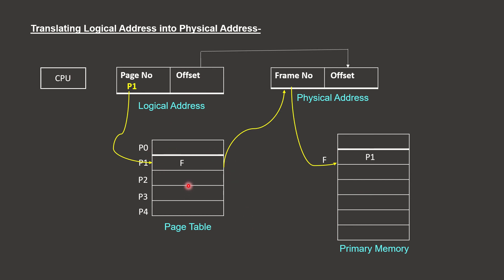We look up the page table. The page table has many entries. We must maintain different page tables for each process. When a page of P1 is stored in primary memory, the frame is called F1 and its base address is stored in the page table. The physical address is obtained by combining the frame number with the offset.